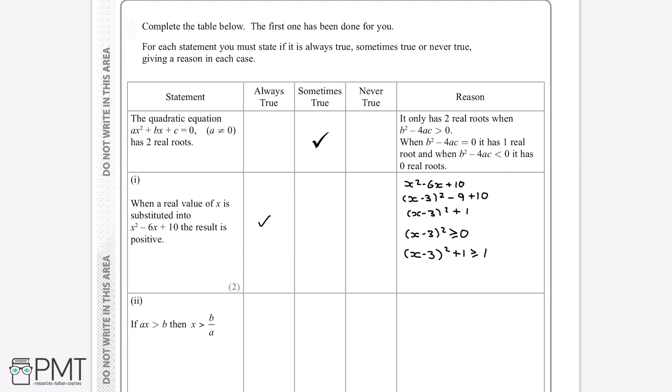This will get us two marks because we've shown that we know how to complete the square, that gives us the first method mark, and then the answer mark for saying that this statement is always true will get us a second mark.